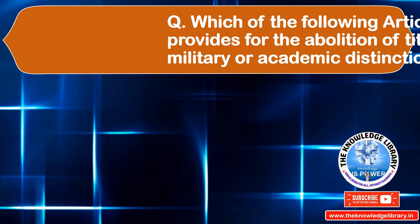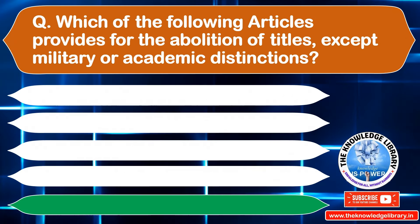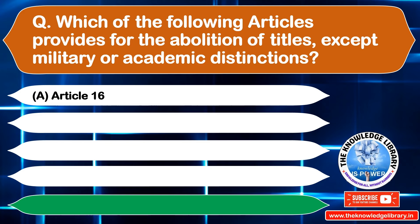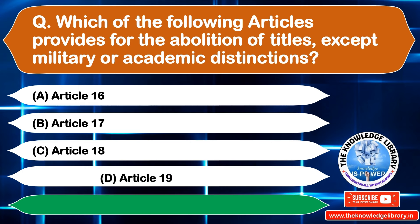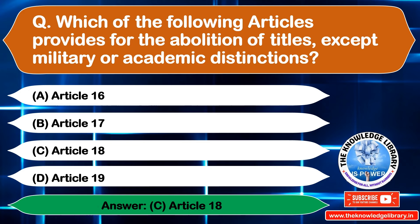The next question is: which of the following articles provides for the abolishing of titles, except military or academic distinctions? Option A: Article 16, Option B: Article 17, Option C: Article 18, Option D: Article 19. The correct answer is Option C: Article 18.